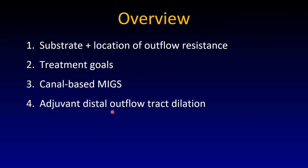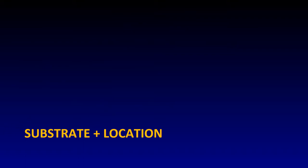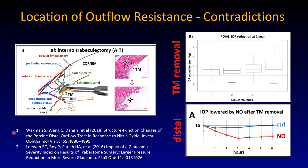Substrate and location — where exactly is the outflow resistance? This is a sagittal section through an eye: the cornea, iris, sclera, ciliary body, Schlemm's canal, and trabecular meshwork. Here a trabecular meshwork ablation device — the Trabectome — has been inserted into Schlemm's canal and then drains through aqueous veins through the plexus into the episcleral veins.